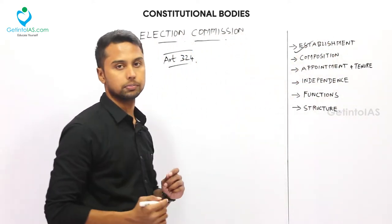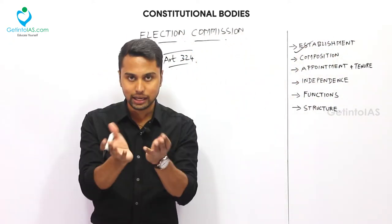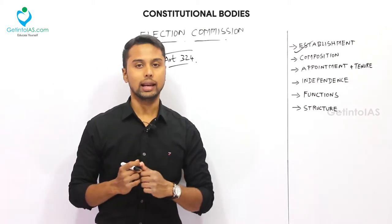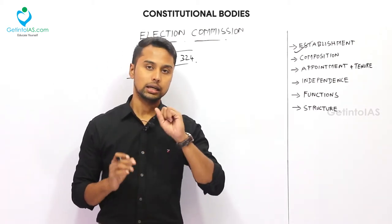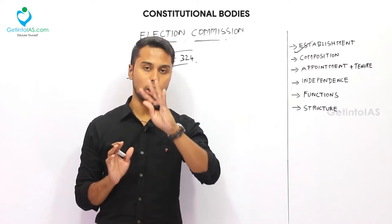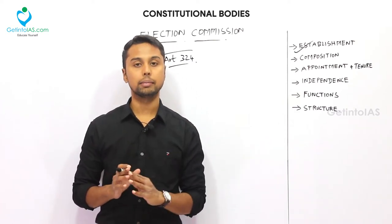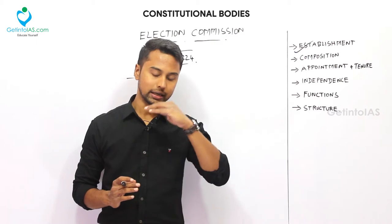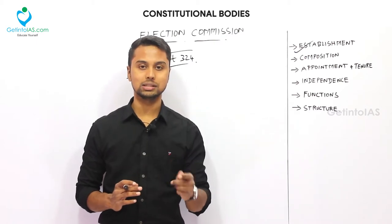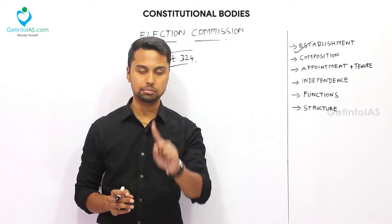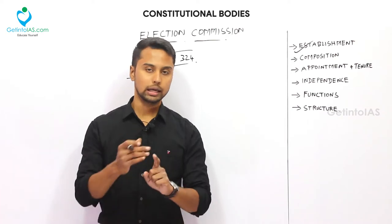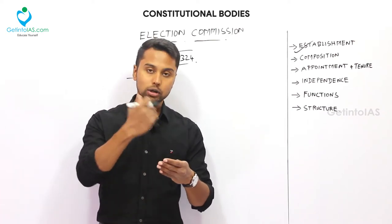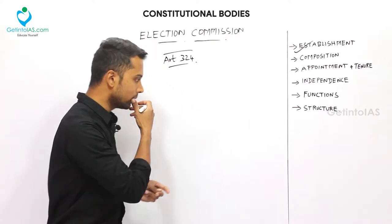Regarding composition — how many members and what kind of structure — the number of members in the Election Commission is determined by the President from time to time. Previously, the Election Commission was a single-member body with only one chairman and no other members.